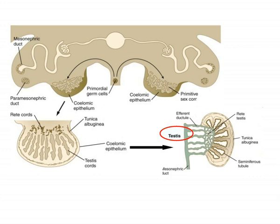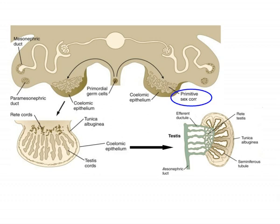The testes consist of seminiferous tubules that act as the structural and functional unit of the testes. The seminiferous tubules are formed as a result of folding of an embryonic structure called sex cords. Each sex cord in turn houses the gonocytes.